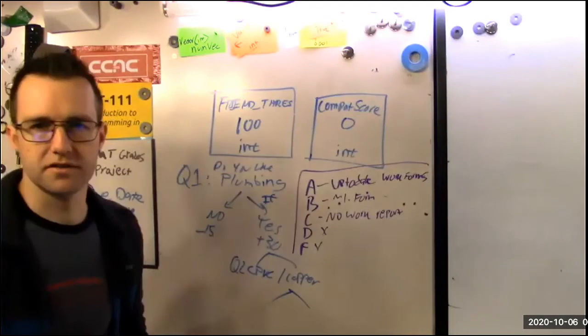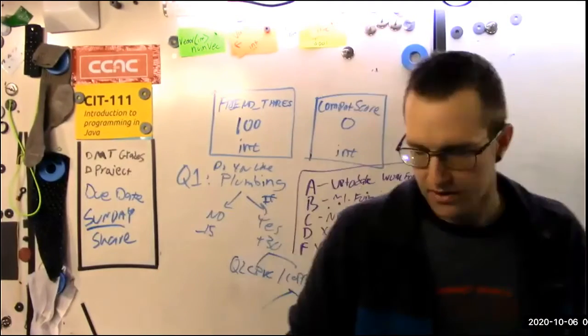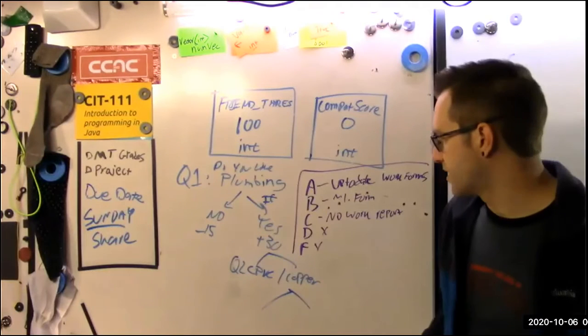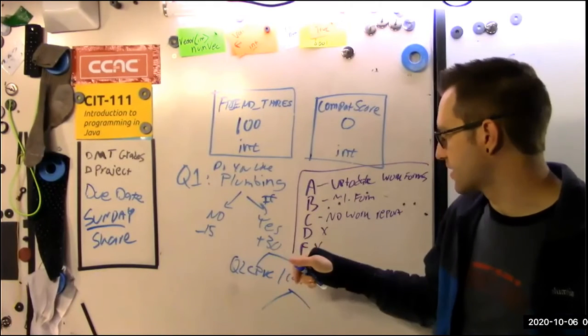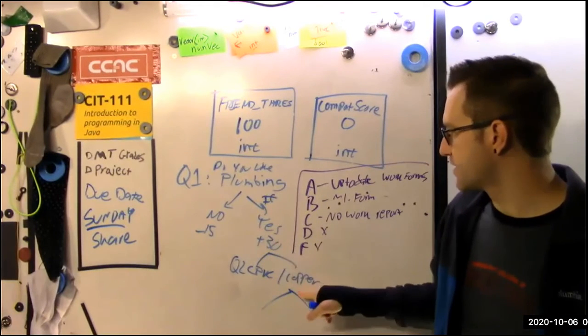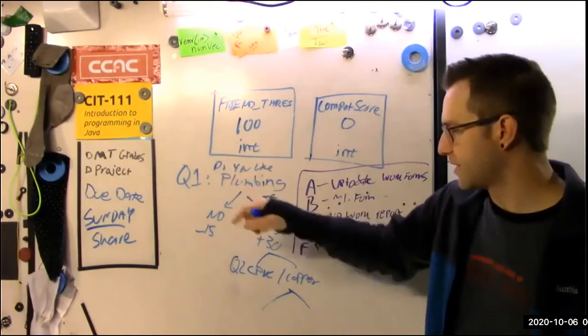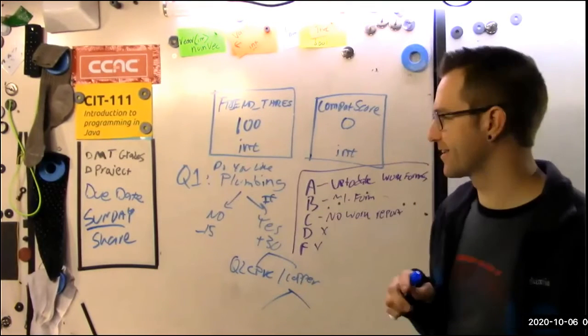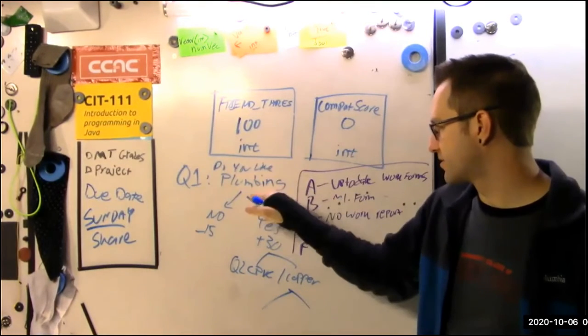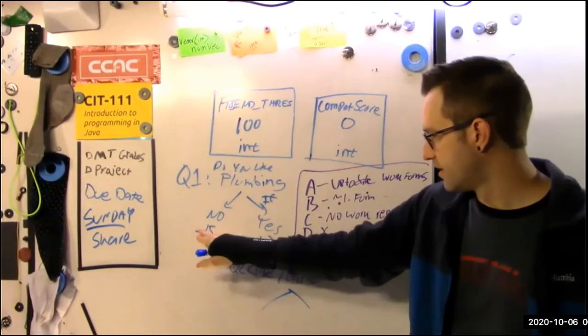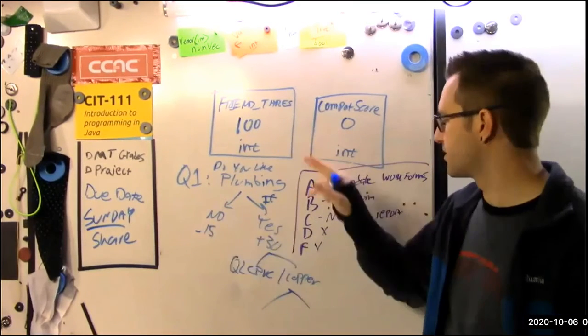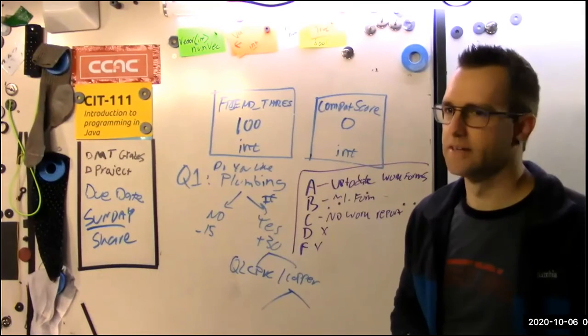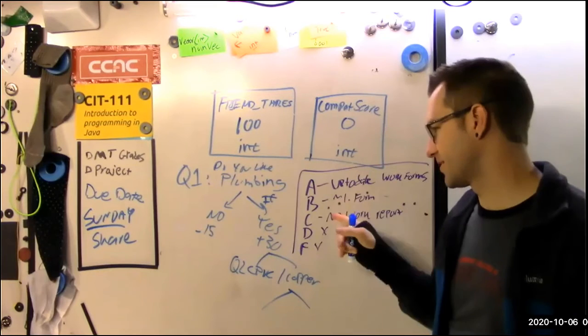So this is a chance to pull together the skills we've built so far. And as an example, in addition to hockey, you can start building nested logic. So maybe one of my great interests in life is plumbing. I like plumbing. And so I might ask, do you like plumbing? If they don't like plumbing, I'm actually going to take away 15 points from the compatibility score because that's going to be a clash somewhere down the line.